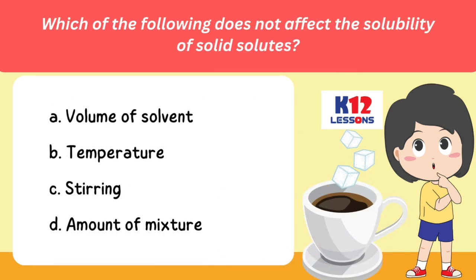Which of the following does not affect the solubility of solid solutes? A. Volume of solvent. B. Temperature. C. Stirring. D. Amount of mixture.